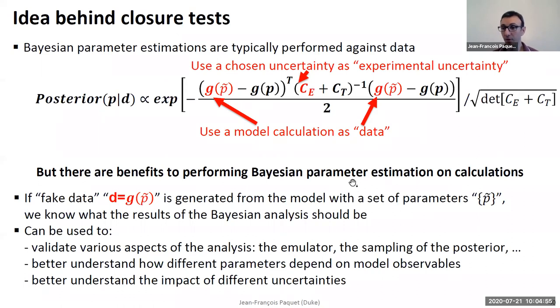You can ask the question, you can have your Bayesian parameter estimation, and you can vary the uncertainty on any of the observables that you're interested in. You can divide your V2 uncertainty by two, you can multiply it by two, you can see what effect this has on your posterior, on your ability to constrain the model parameters.